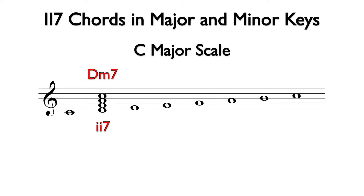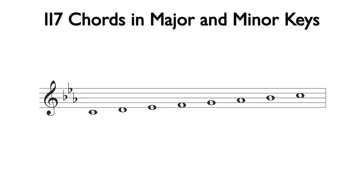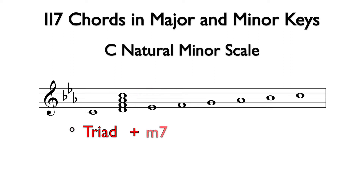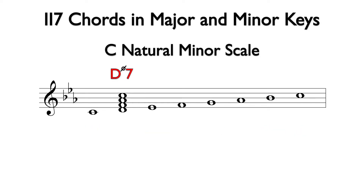Now let's examine the two-seven chord possibilities in minor. Notice the key signature changed to three flats, so this is a C natural minor scale. The two chord is based off of D. Using the notes from the scale to build a seventh chord, we can add F, A-flat, and C above the D note. The bottom three notes spell a D diminished triad, and the interval from D to C is a minor seventh. A diminished triad plus a minor seventh interval above the root is a half-diminished seventh chord. This is D half-diminished seventh, and we will use the lowercase two Roman numeral with a circle with a slash through it and a seven for the analysis. The two half-diminished seventh chord comes from the second degree of any natural minor scale.